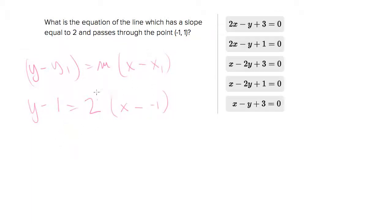So let's distribute the 2 and put everything on the left side which is what they seem to be wanting. So we have y minus 1 equals 2x and this is minus negative 1 is like saying plus 1 so this is 2x plus 2.